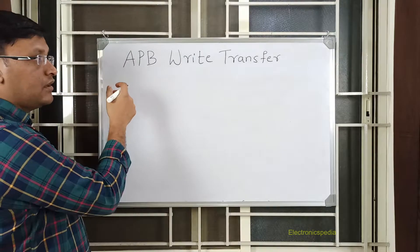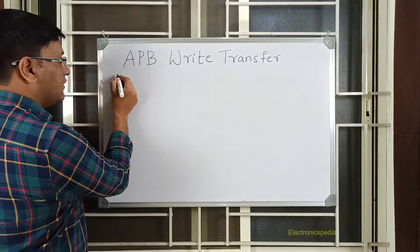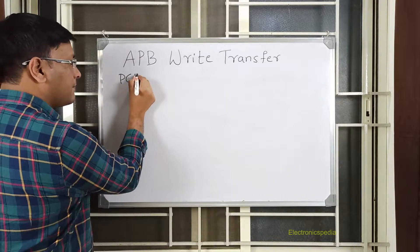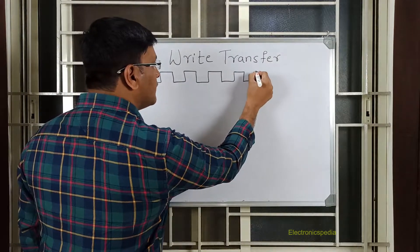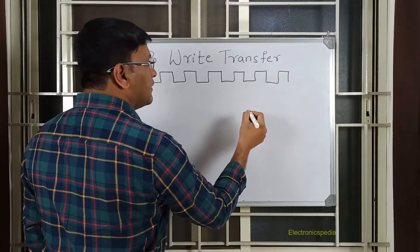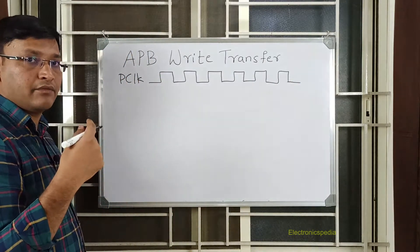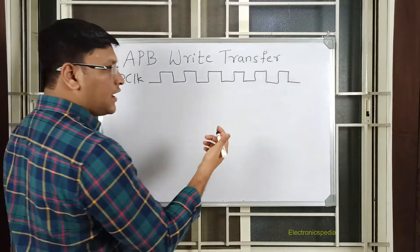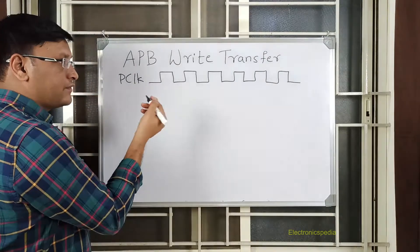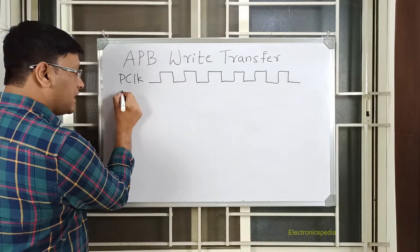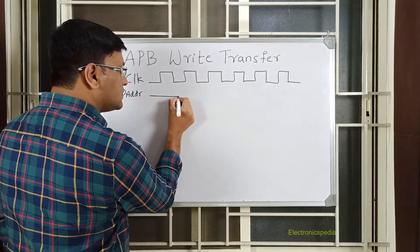I'll explain how the write transfer looks like with the help of waveforms. So this is my PCLK. We have two types of transfers: the first one is a write transfer without the wait state, and then we have the write transfer with the wait state. I'll explain both of those scenarios.